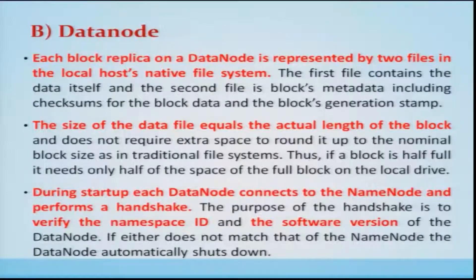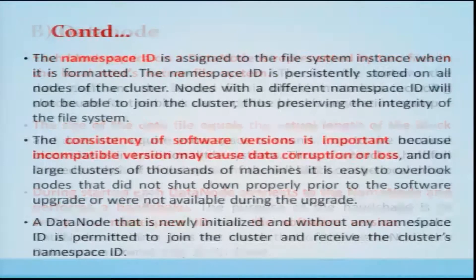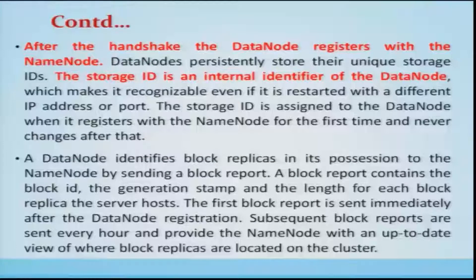Each block replica on a DataNode is represented by two files in the local host's native file system. The first file contains the data itself, and the second file is the block's metadata, including the checksum for the block data and the block's generation stamp. During startup, each DataNode connects to the NameNode and performs a handshake. The namespace ID is assigned to the file system instance when it is formatted. Consistency of software version is important because incompatible versions may cause data corruption or loss. After the handshake, the DataNode registers with the NameNode and persistently stores its unique storage ID.